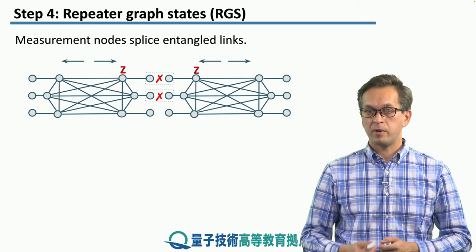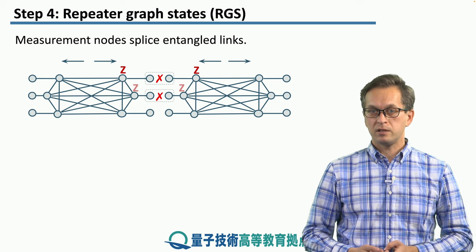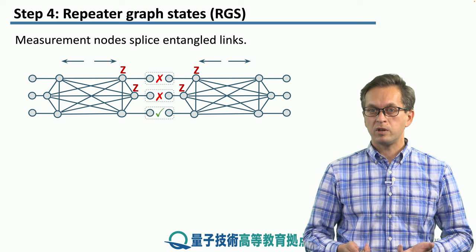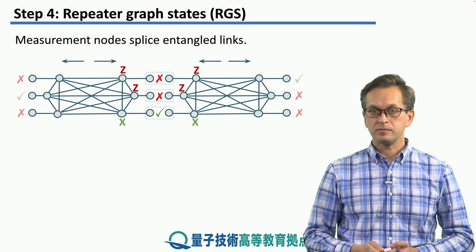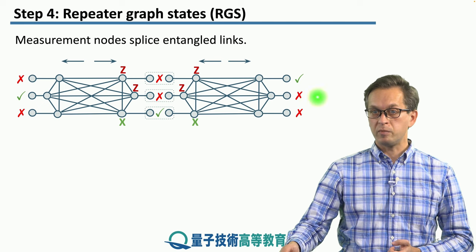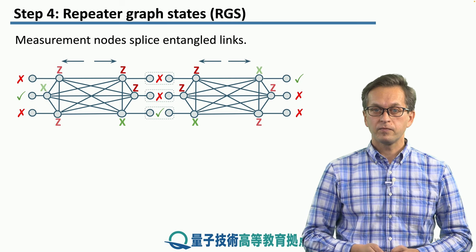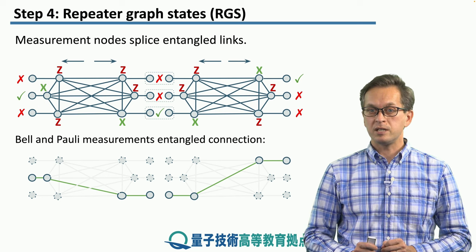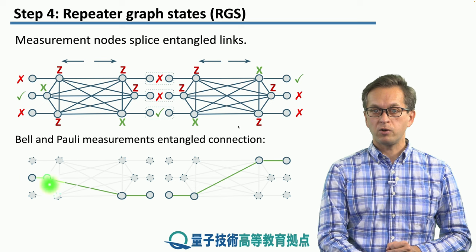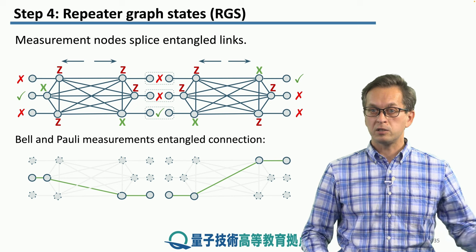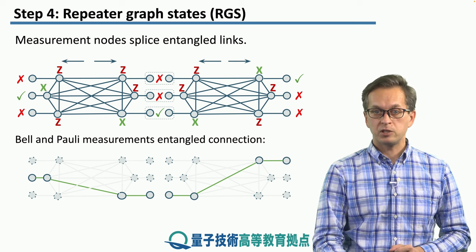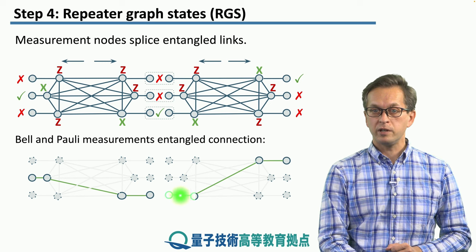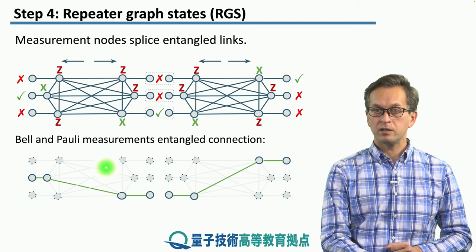Then we attempt a Bell pair measurement at another pair of arm qubits. Again, if we fail, we measure their neighbors in the Z basis. Finally, we attempt the Bell state measurement for the third time, and let's say that we succeed. Now we measure the neighbors in the X basis, and similarly on the other sides of the RGS at different measurement nodes to the right and left. What we create is a bridge of connected qubits running all along the connection from one end node to the other. By performing X measurements on these intermediate qubits and a Bell state measurement, we create an entangled connection between the two end qubits.